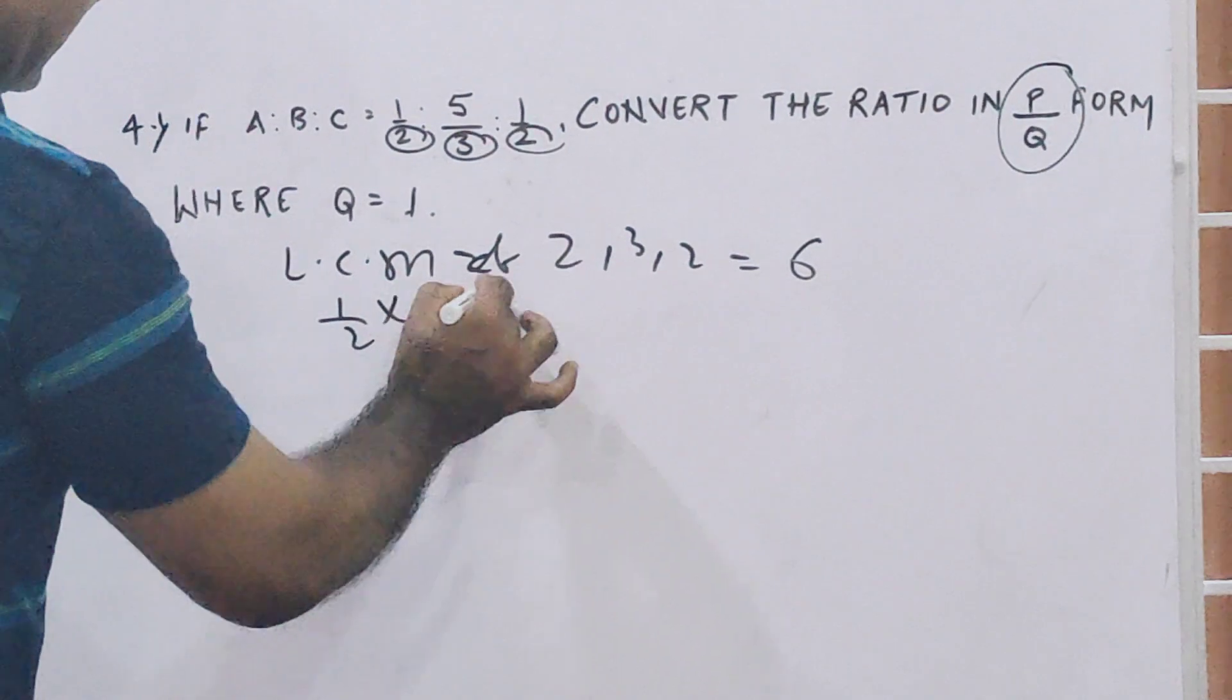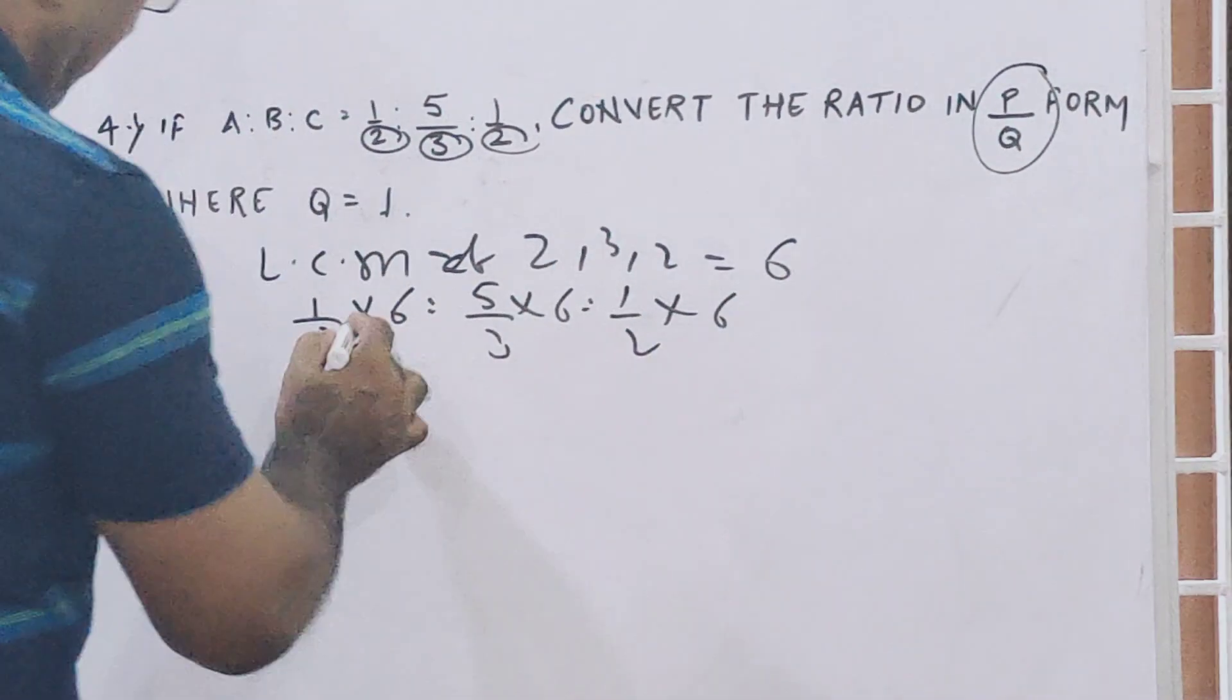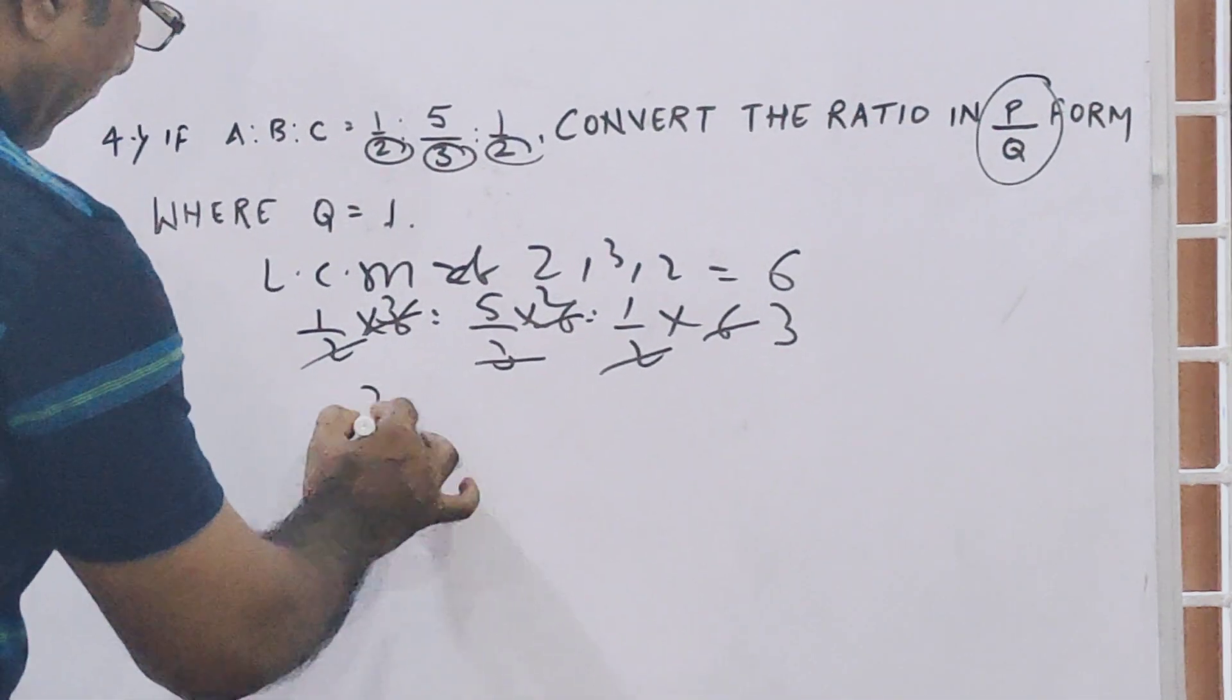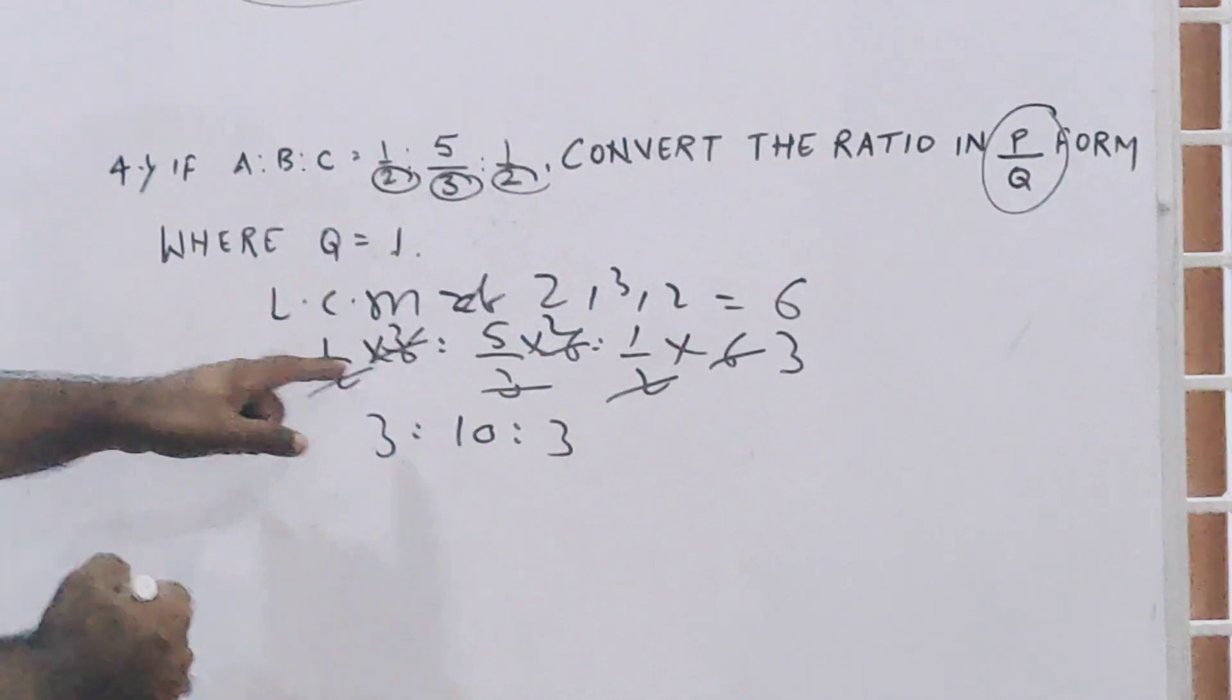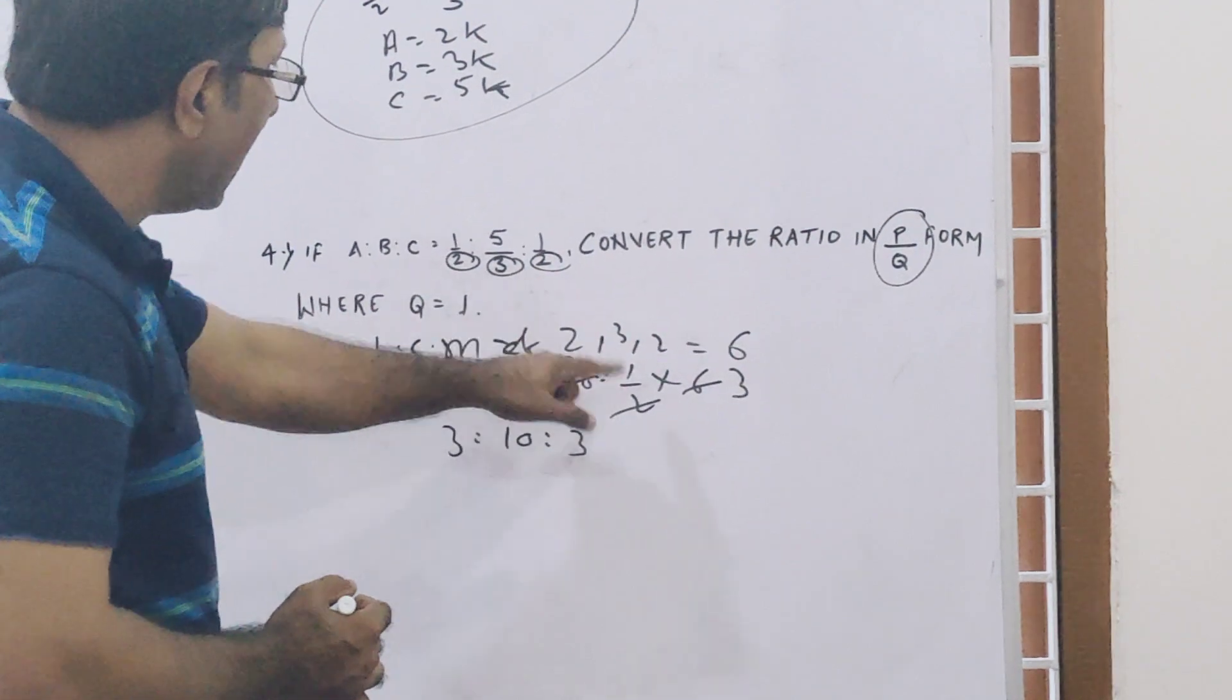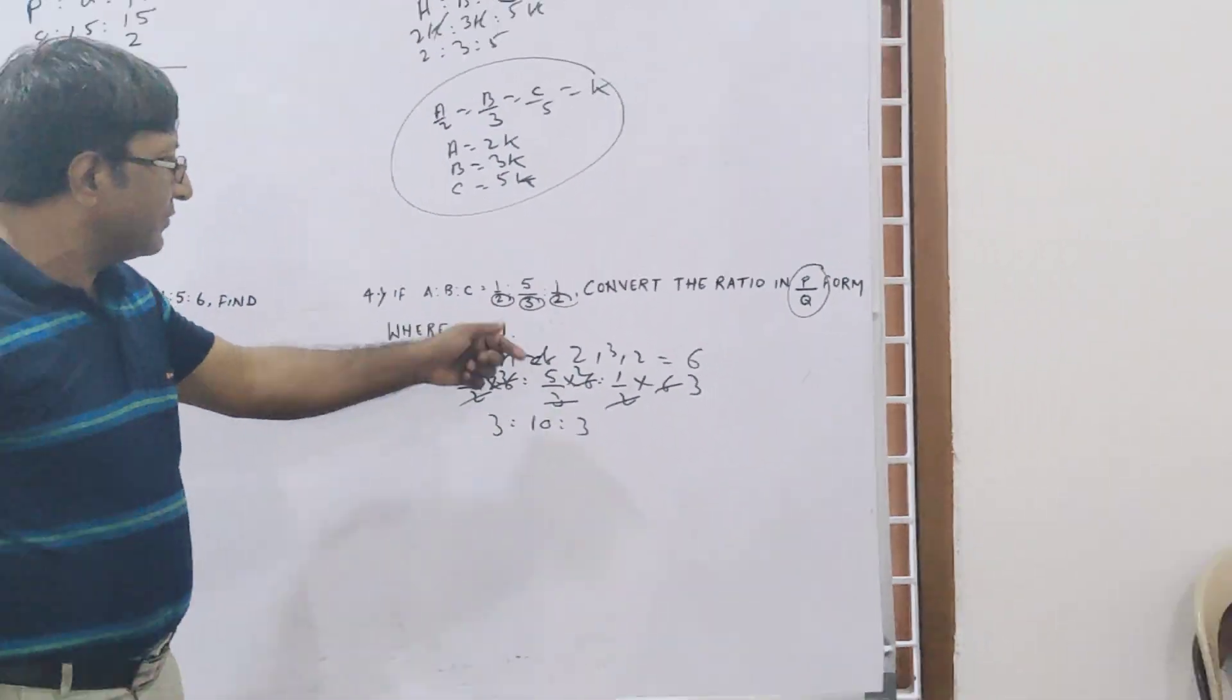So one-half into 6, and 5 by 3 into 6, and one-half into 6. So one-half times 6 is 3, 5 by 3 times 6 is 10, and one-half times 6 is 3. So your answer is 3 ratio 10 ratio 3.